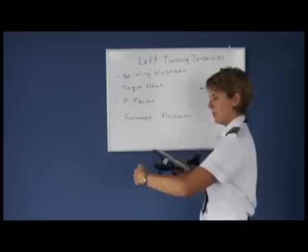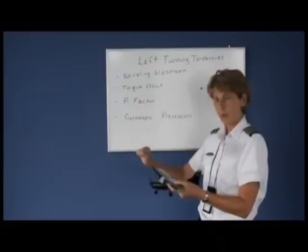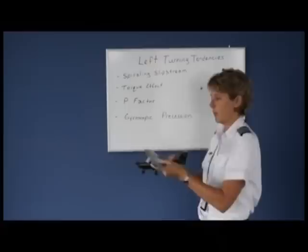The next one is torque effect, and torque effect comes from the way the engine causes the propeller to turn in one direction. Newton says for every reaction there's an equal and opposite reaction. So with a rapid increase in throttle, the propeller turns harder, causing the airplane to roll. This affects us differently on the ground and in the air.